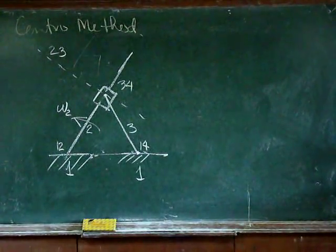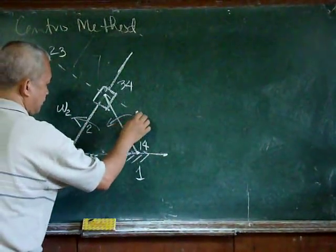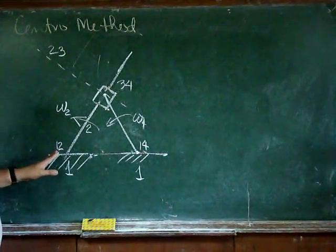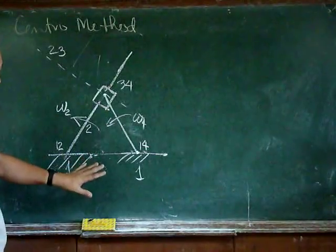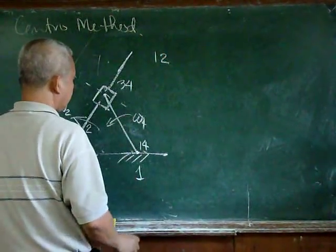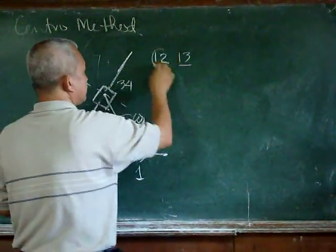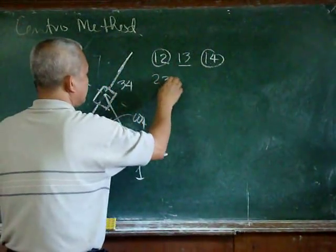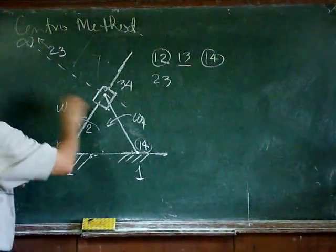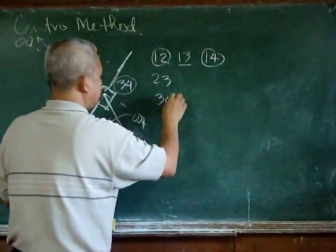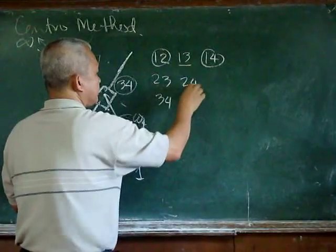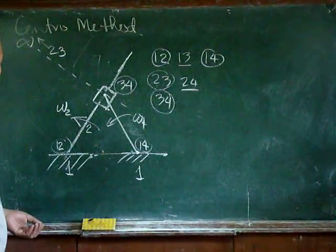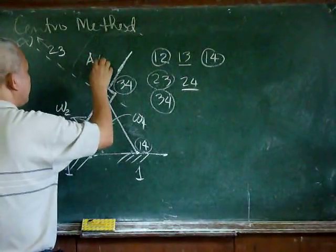In this mechanism we wish to determine omega 4 given omega 2. We have already determined the location of instant centers: 1-2 and 1-4 are already determined, 2-3 is at infinity, and 3-4 is here at that point. We also need to determine center 2-4. This point is actually point A in body 2.